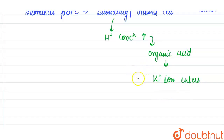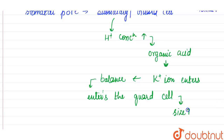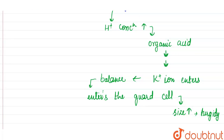The potassium ions enter from the subsidiary cells, which balances the water movement, and they move towards the guard cells. When potassium ions enter into the guard cells, the size of the cell increases, which also increases the turgidity of the stomata. Finally, the stomatal pore opens.